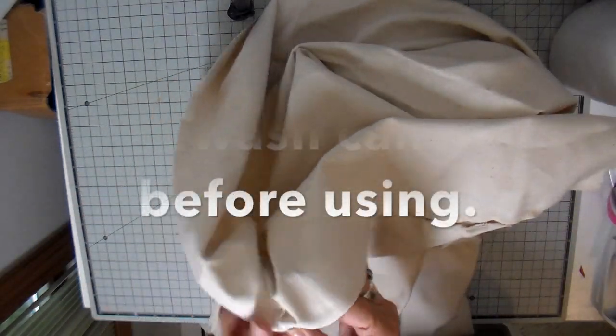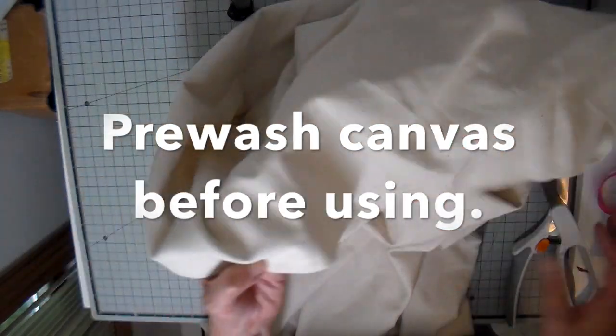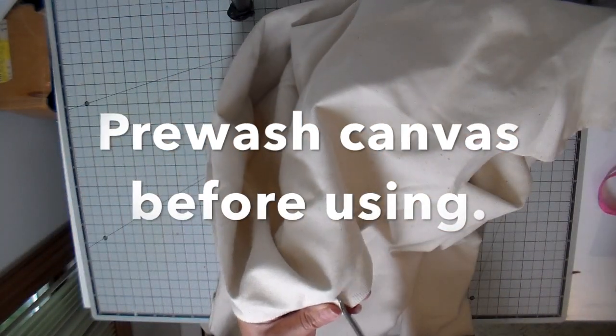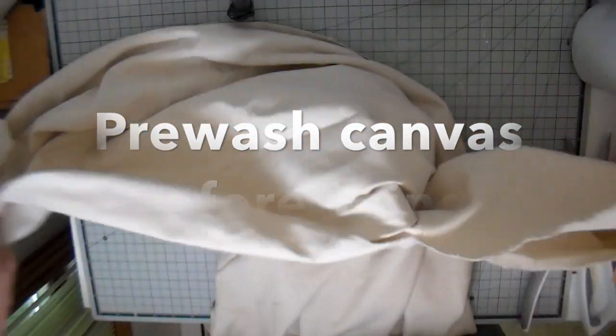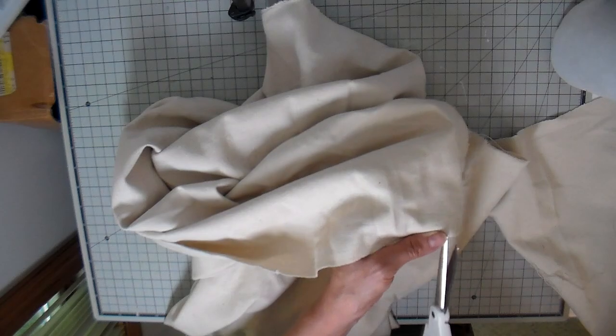The canvas that I'm using is 100% cotton and it is 60 inches wide and I'm just going to clip it and then just rip. My outer pieces for my tote are 16 inches wide and 17 inches high and then I'm also going to do another rip here.